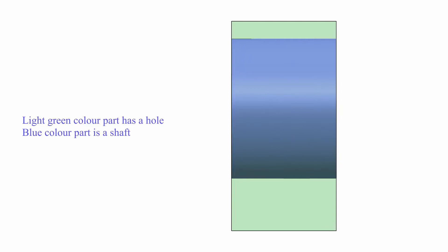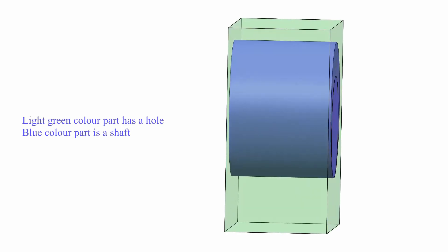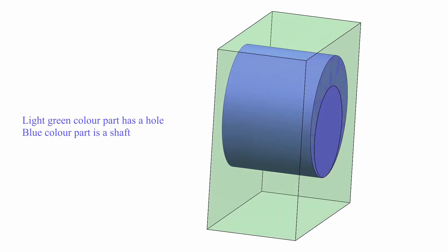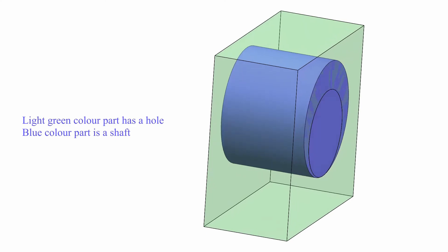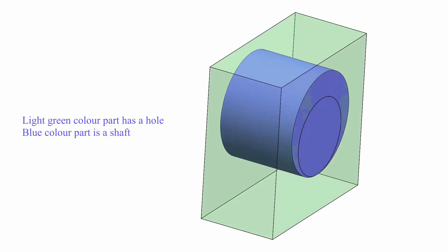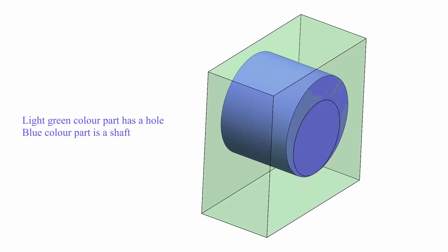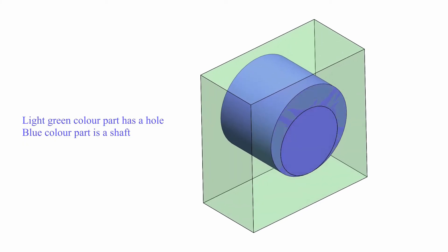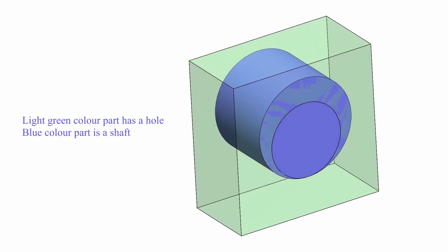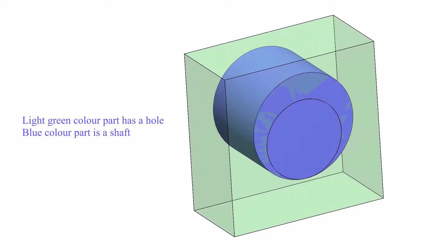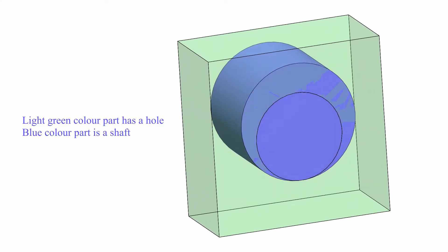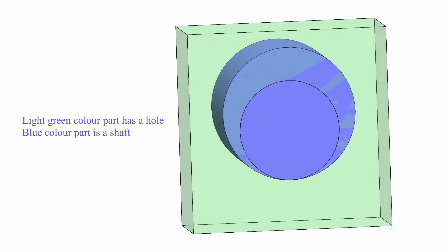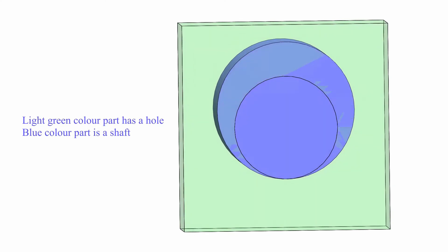In an interference fit, the shaft is always bigger than the hole into which it fits. Parts need to be forced or shrunk fitted together, creating permanent assemblies that retain and locate themselves. Sub-classifications include: force fit, used in fitting of rims; medium force fit, used in car wheels; and tight fit, used in rocker arms.